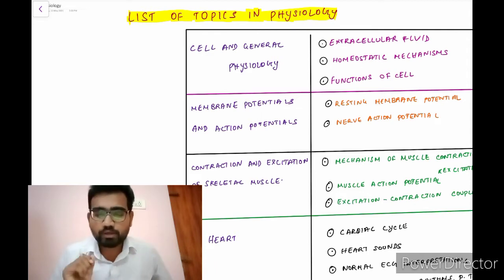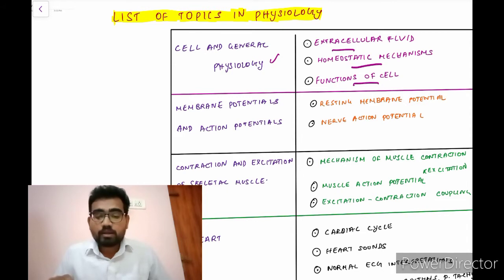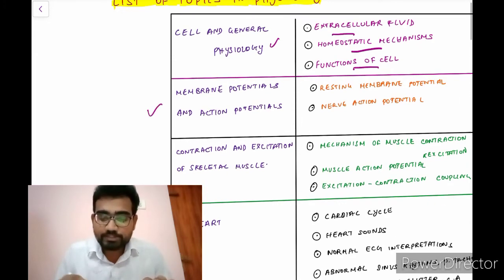So with that, we'll move to the today's video. So the topics to be read in physiology. The first one, it's going to be the cell and the general physiology in that the extracellular fluid, the homeostatic mechanisms and the functions of the cell should be covered. And then the membrane potentials and the action potentials. So the resting membrane potential is very important and the nerve action potential.